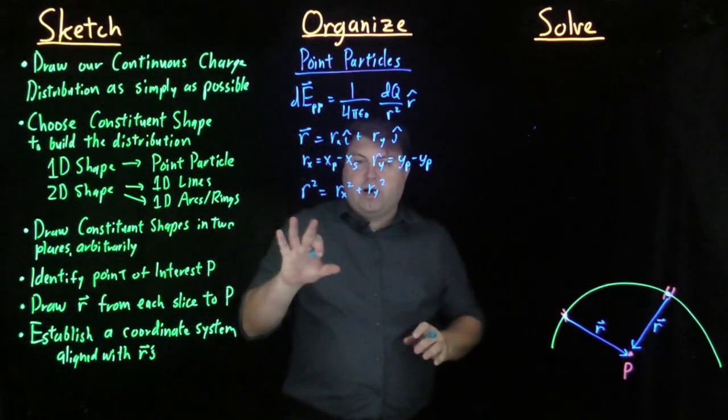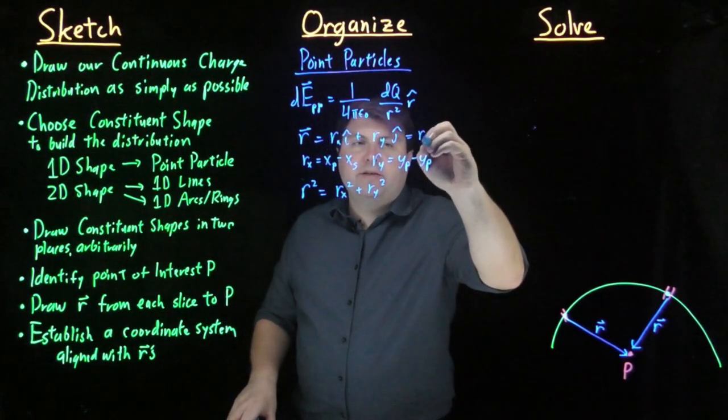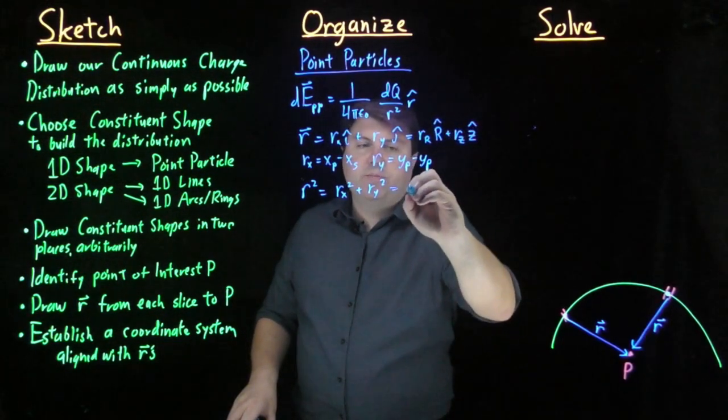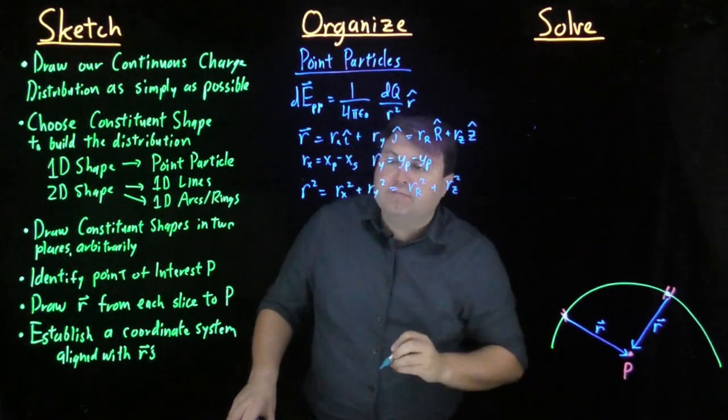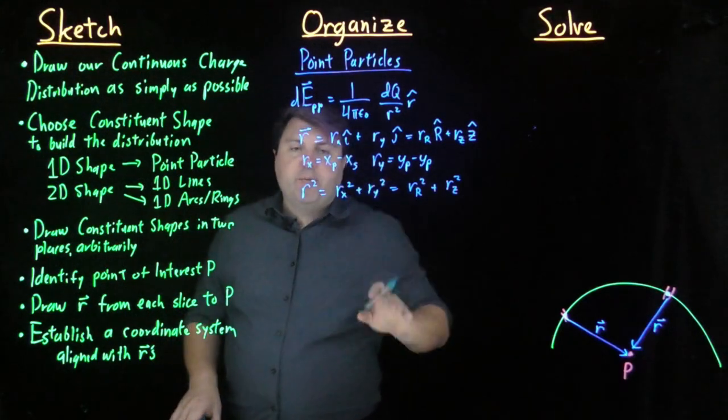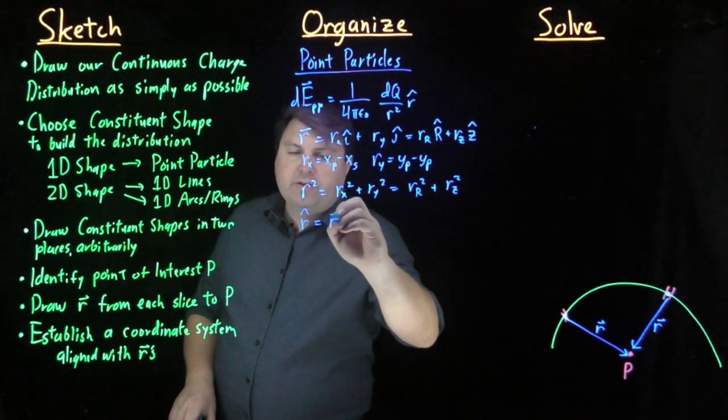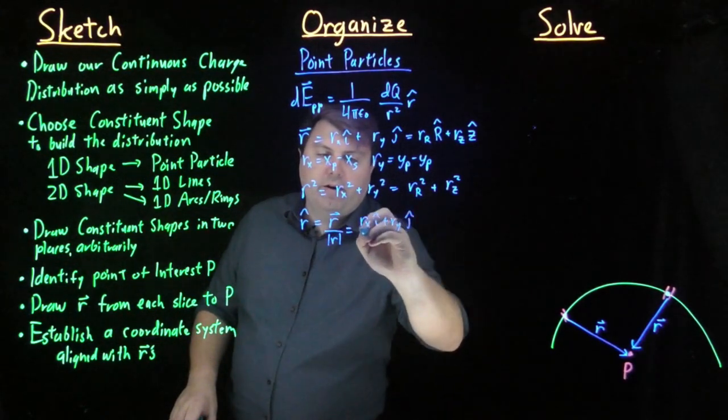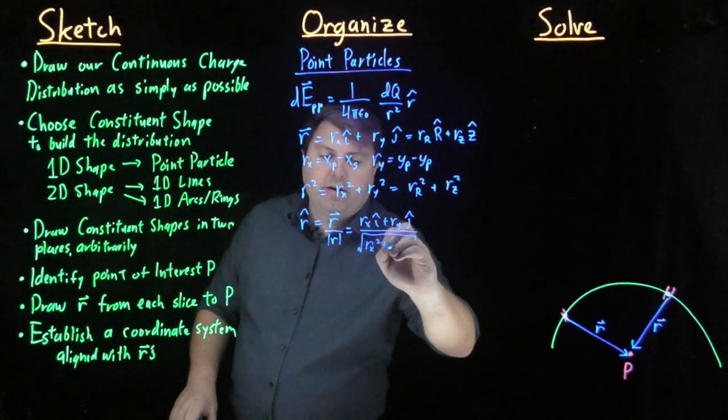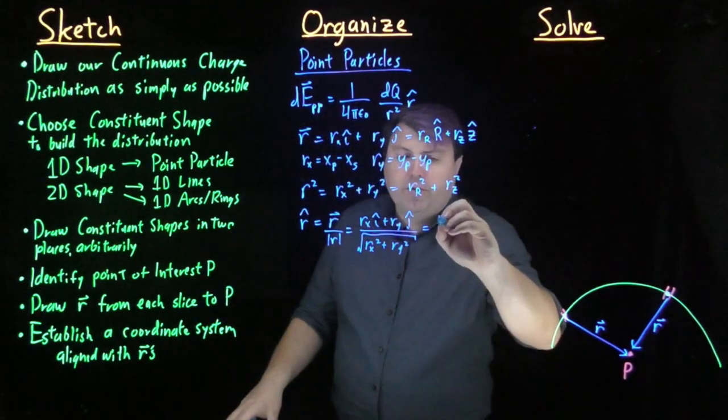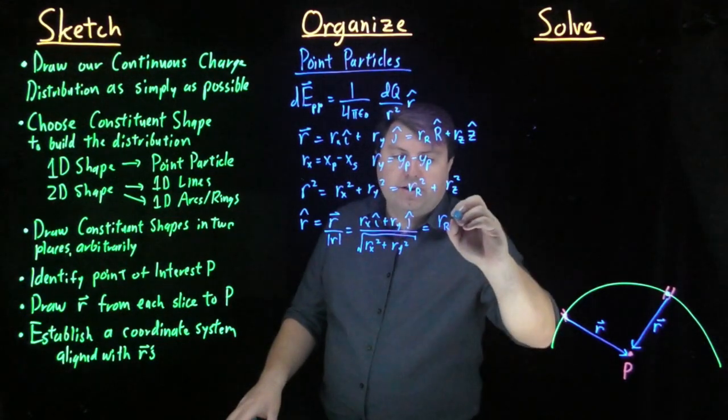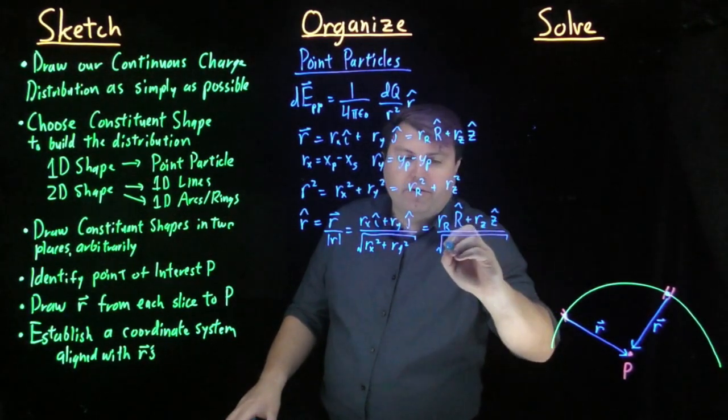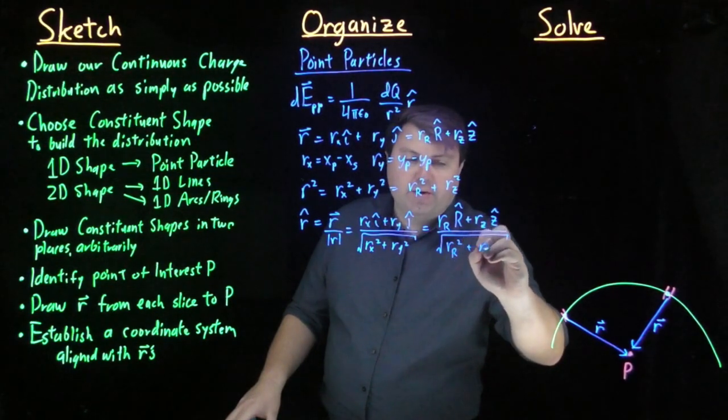If we're dealing with polar coordinates, we might also want to talk about the radius in the r-direction in r hat plus the distance in the z-direction in z hat. So this could also be r_sub_r squared plus r_sub_z squared. Our r hat is equal to r vector over the magnitude of r, which could be r_x i hat plus r_y j hat over the square root of r_x squared plus r_y squared. But if we're dealing in polar coordinates, it would be r in the radial direction r hat plus r in the z-direction z hat over the square root of r in the radial direction squared plus r in the z-direction squared.